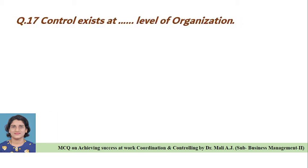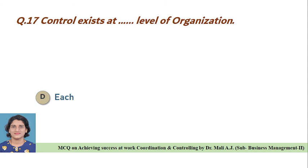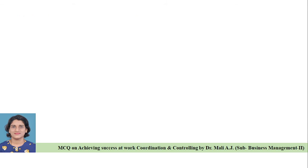Question seventeen: Control exists at dash level of organization — Option A: top, Option B: middle, Option C: lower, Option D: each. Correct answer is Option D, control exists at each level of organization.